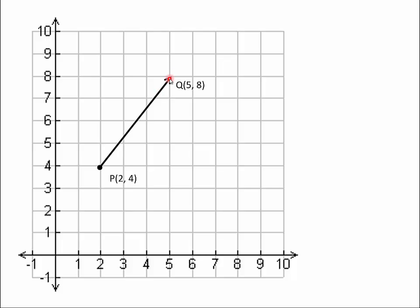And then it has an ending point where it stops. I labeled that point Q, and that's the point. Because this has an initial point of P and a terminal point of Q, sometimes we'll label that vector PQ with a little arrow above it to indicate that it's a vector. Other times we'll just represent the vector as a bold face PQ.